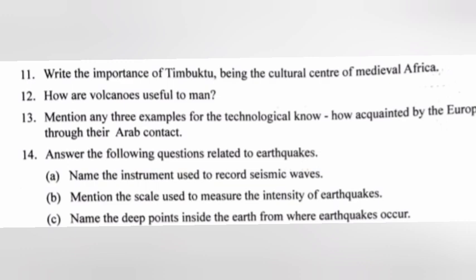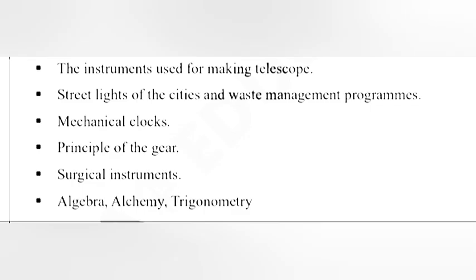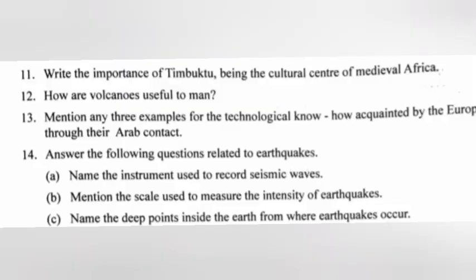Question 13: Mention any three examples of technological know-how acquired by Europe through their Arab contact. Answer: Instruments used for making telescopes, street lights of cities and waste management programs, mechanical clocks, the principle of the gear, surgical instruments, algebra, alchemy, and trigonometry.